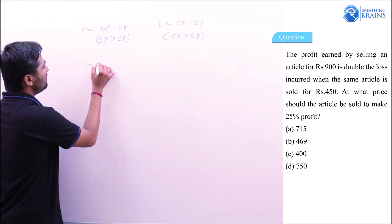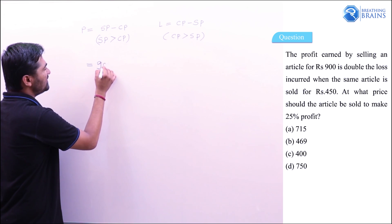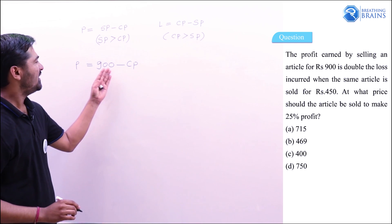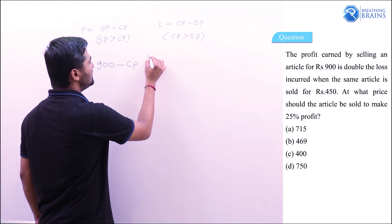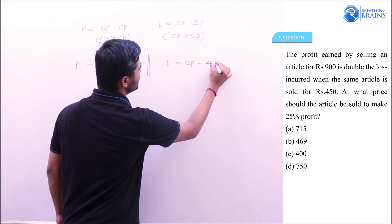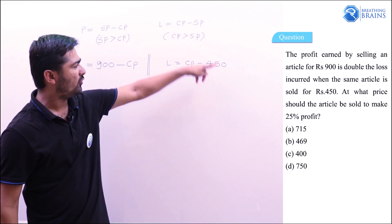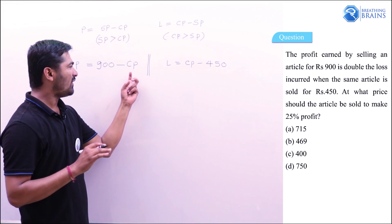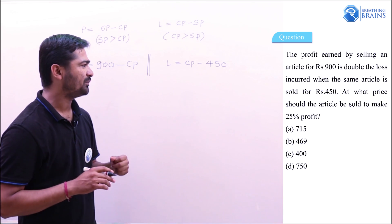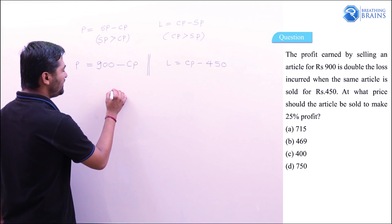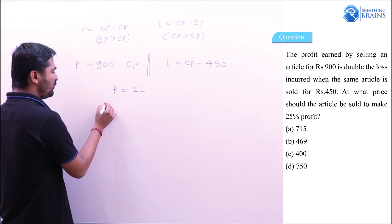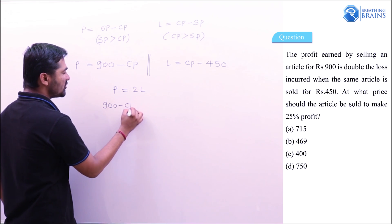When selling price is ₹900, profit = 900 − CP. When selling price is ₹450, loss = CP − 450. The cost price is the same for both since the article is the same. Given that profit is double the loss: 900 − CP = 2 × (CP − 450).